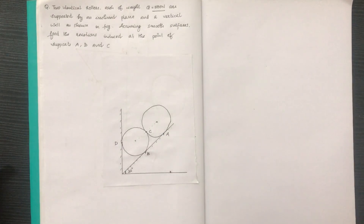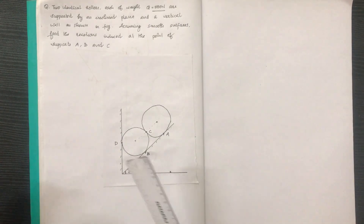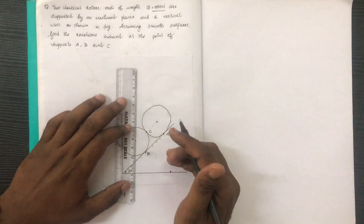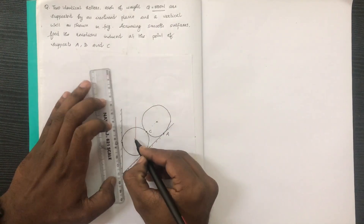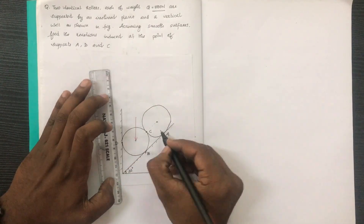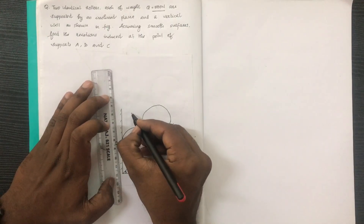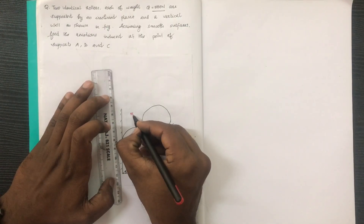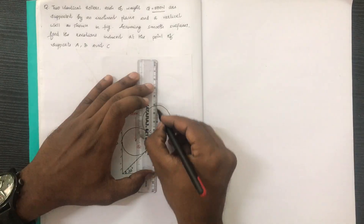First of all, we have free body diagrams. If you have any reactions in this video, we can resolve the forces. The weight of this body is 500 N, acting vertically downward.